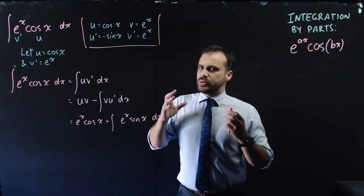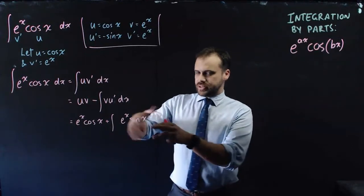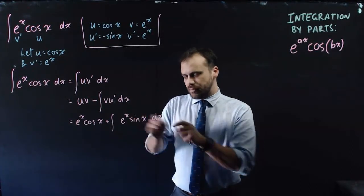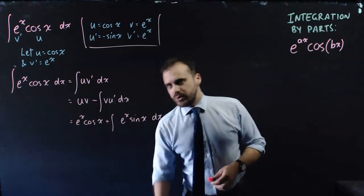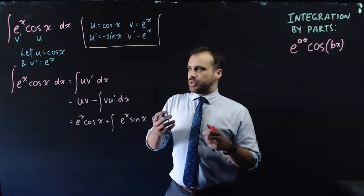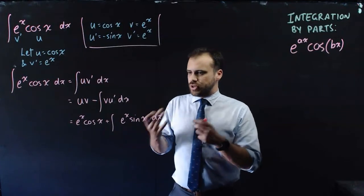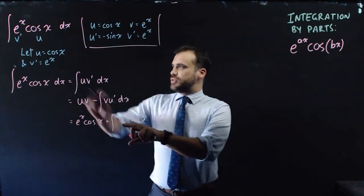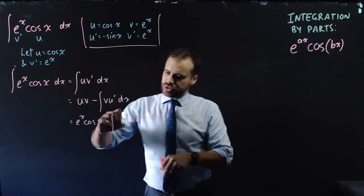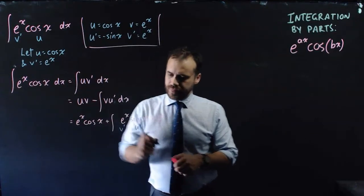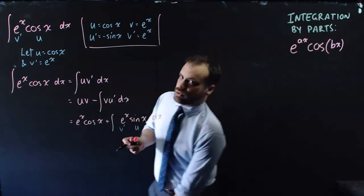All right, and now let's do our second integral here, our second integration by parts, by integrating this. Now the question is, which one should be v' and which one should be u? Well, you don't change your ideas about this. So this original one was our v', so this one again. Okay, let's do that.